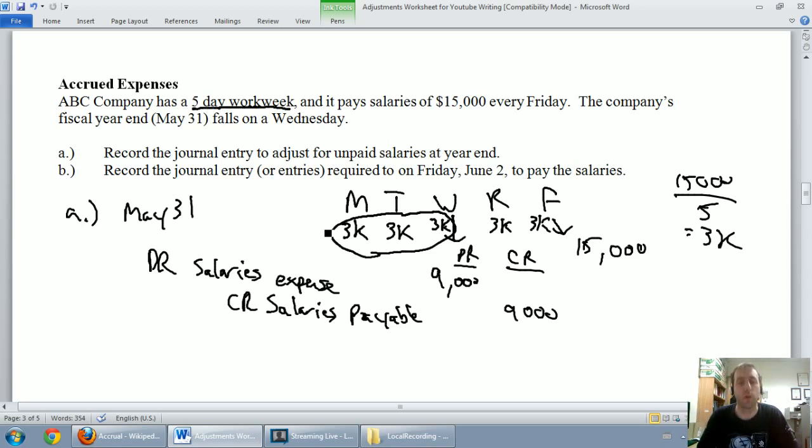We've done our adjusting journal entry: debit salaries expense, credit salaries payable. Now I want to remind you why adjusting journal entries are tricky. There's no employee knocking on our door on May 31st saying you owe us money. They're not gonna worry about it until Friday. But on Wednesday we're not actually transacting any business with our employees. That's what makes this an adjustment - there's no transaction on the date, we've just got to know how much salary we owe and do the adjustment.